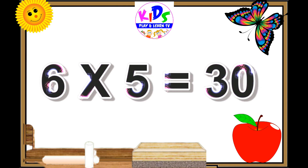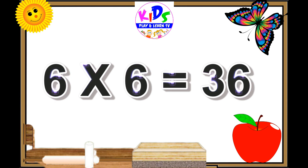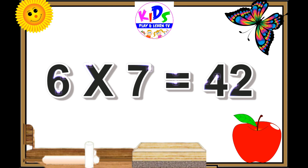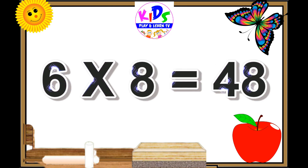Six fives are thirty, six fives are thirty. Six sixes are thirty-six, six sixes are thirty-six. Six sevens are forty-two, six sevens are forty-two.